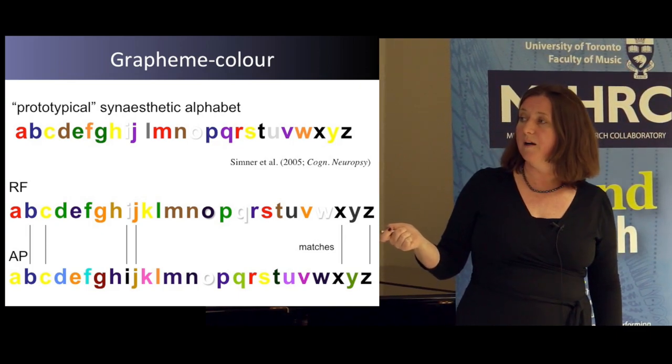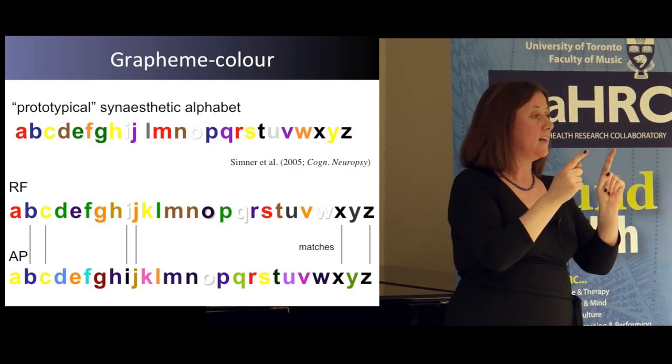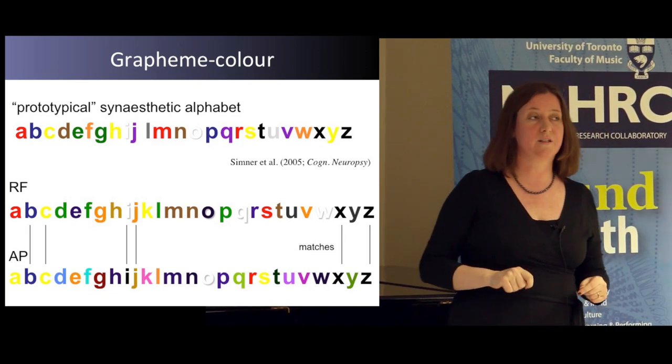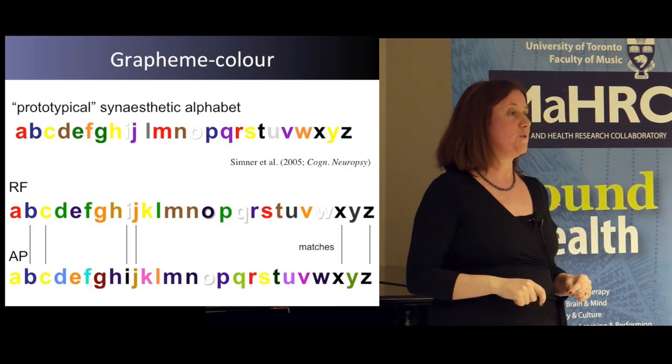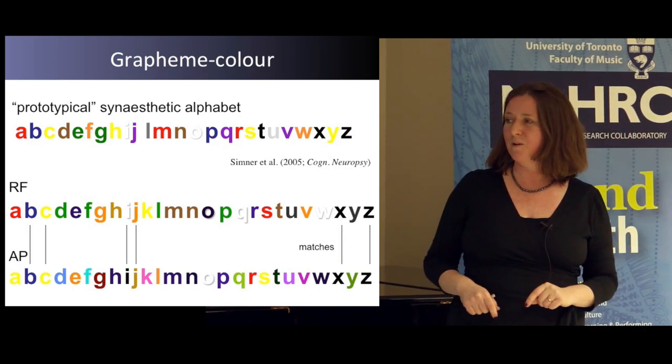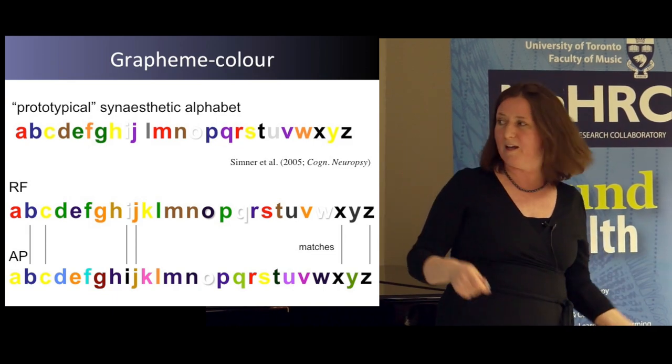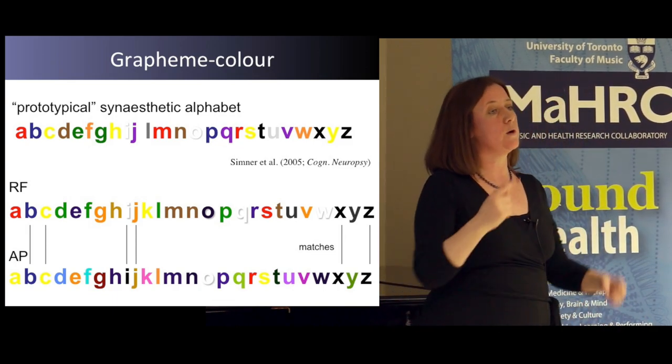What I've shown here are the coloured alphabets of two of my synesthete participants, RF and AP. They're different to each other — and this is very typical. When you get two synesthetes together, they'll often disagree on their colours. RF would say 'I can't believe you think A is yellow — of course it's red.' AP would disagree. I randomly picked these two and counted six matches out of 26 letters. Not a lot of matches. For a long time — maybe 150 years — this led researchers to think that synesthetic associations are idiosyncratic and random.